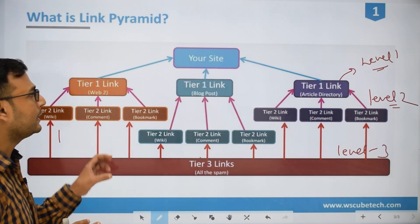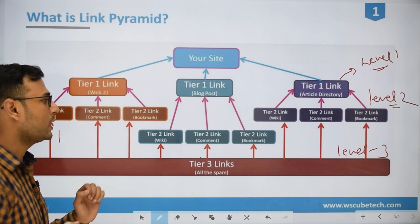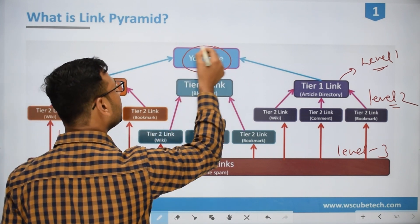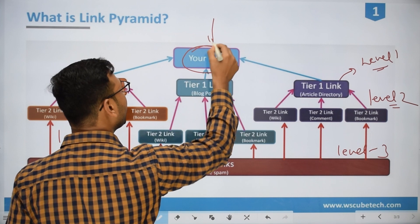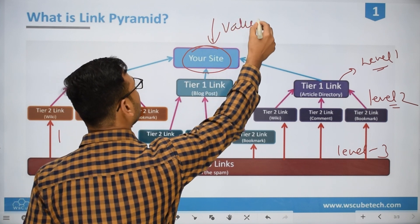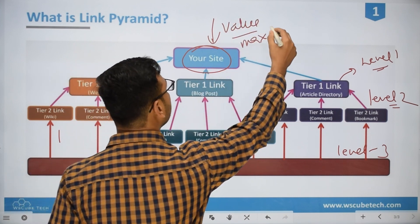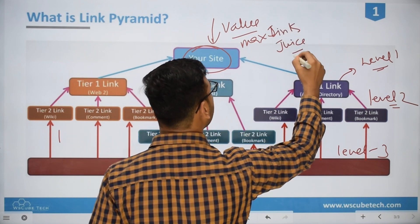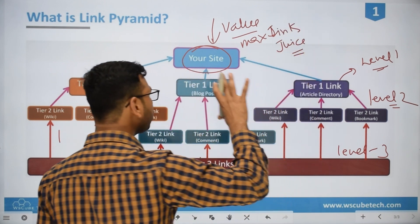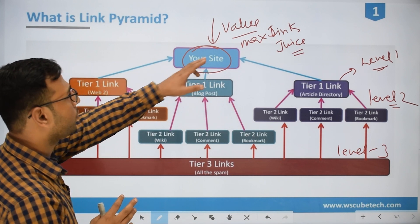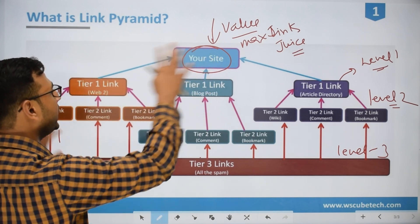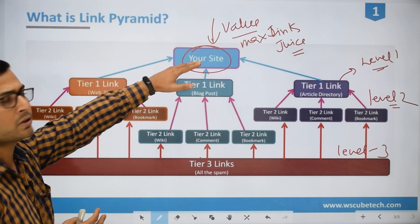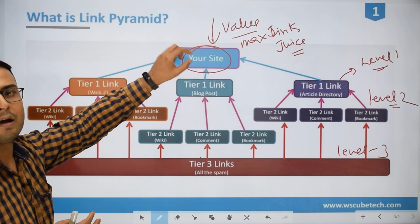Now see how this link pyramid actually works. Our end goal is — here is my website — and our end goal is to provide the maximum link juice to this website. When our final goal is to provide the maximum link juice, we are going to create a link building strategy in such a way that the maximum link juice gets transferred to our website.